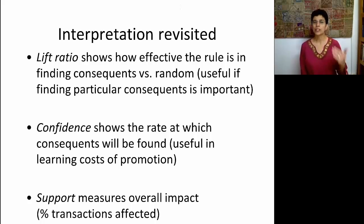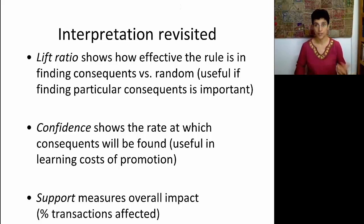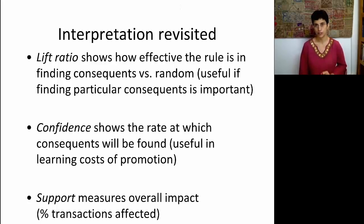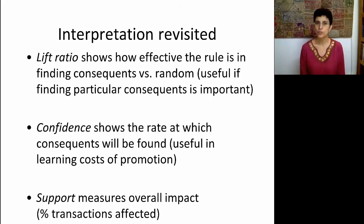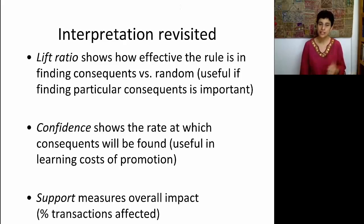The lift ratio, which compares confidence to a benchmark confidence, shows how effective a rule is in finding the consequent versus just a random selection — especially useful when looking for particular consequents of interest. Confidence shows the rate at which the consequent will be found, useful for estimating costs of promotion. Support measures the overall impact, reflecting the percentage of transactions affected by these rules.